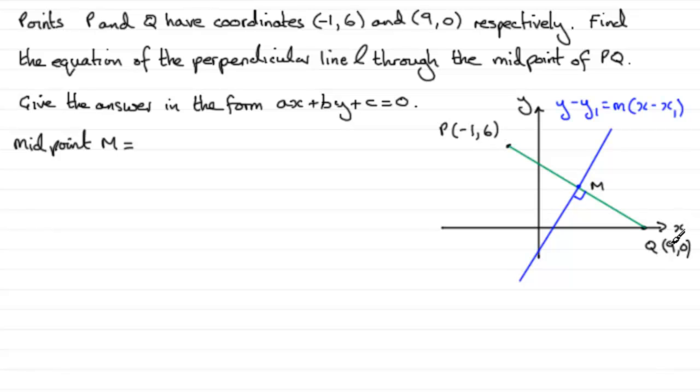So we'd have minus 1 plus 9, let's just write that down, minus 1 plus 9, and that's all divided by 2. And for the Y coordinate, it'll be 6 plus 0, all over 2. And being a coordinate, we should put that in brackets.